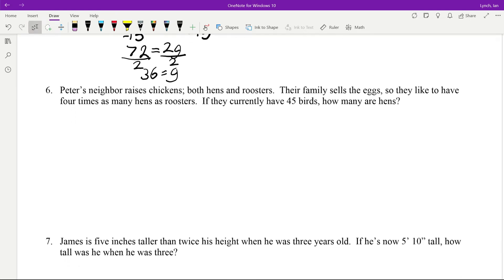So Peter's neighbor raises chickens, hens and roosters. And their family sells eggs. So they like to have four times as many hens as roosters. If they currently have 45 birds, how many are hens? Ooh, this is a tough one. Okay. So I'm going to go hens are H, roosters are R. So if I go and say that the number of hens, well that's four times the number of roosters. Because there are four times as many hens as roosters. Which means if I take the number of roosters and multiply by four, I get the number of hens. So what I'm going to do here is I'm going to use this. And I'm going to say 45, so the total number of chickens they have, is equal to the number of roosters plus the number of hens. But we know the number of hens is four times the number of roosters. Which means when we combine like terms, R plus 4R is 5R.